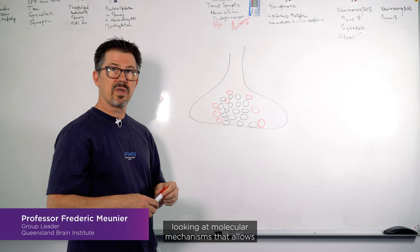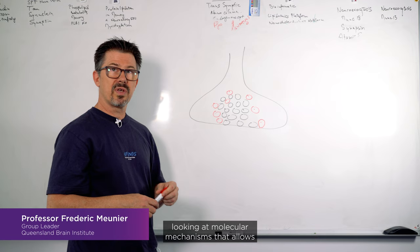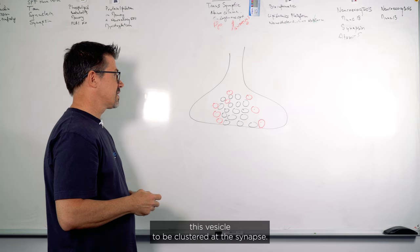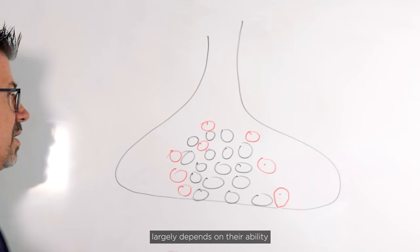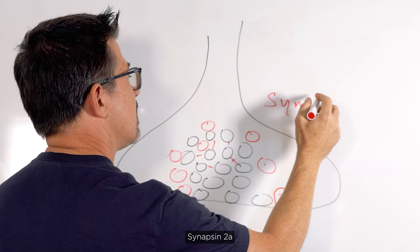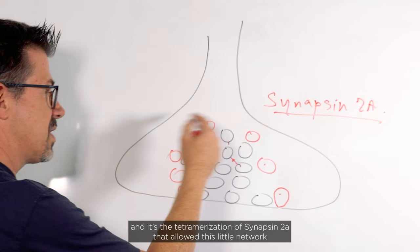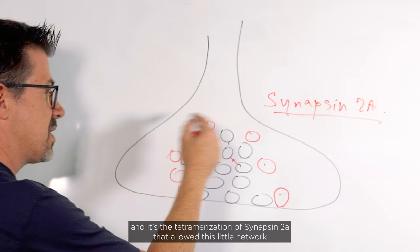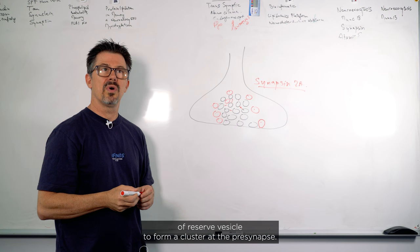For us this was very important because we can start looking at molecular mechanisms that allow these vesicles to be clustered at the synapse. One of the results that we got is that the way these vesicles are clustered largely depends on their ability to form a cross-linking network using a molecule called synapsin 2A, and it's the tetramerization of synapsin 2A that allows this little network of reserved vesicles to form a cluster at the presynapse.